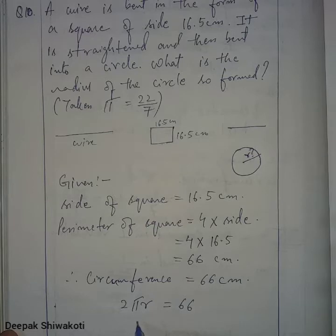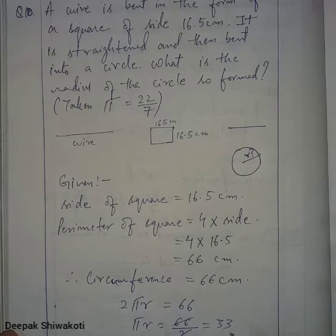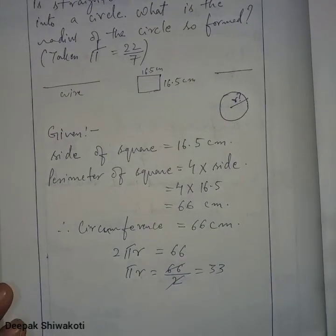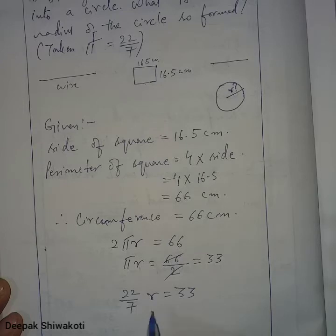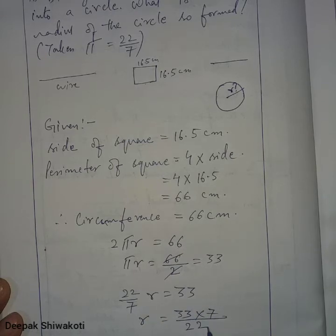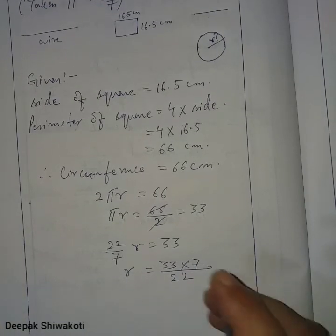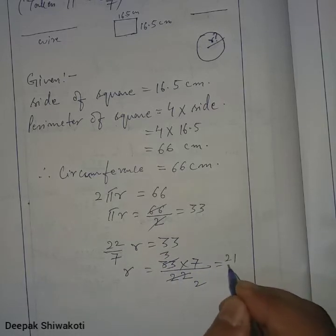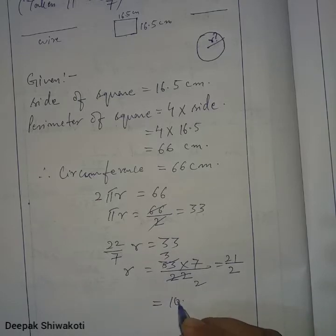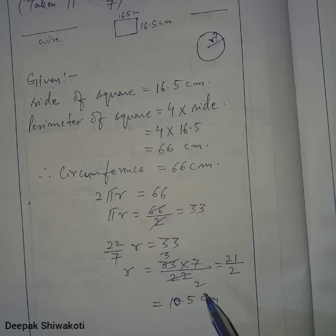Circumference equals 2πr = 66, so πr = 66/2 = 33. Now π = 22/7, so (22/7) × r = 33, which gives r = 33 × 7/22. Calculating: 33 × 7 = 231, divided by 22 gives 10.5. The radius is 10.5 centimeters.